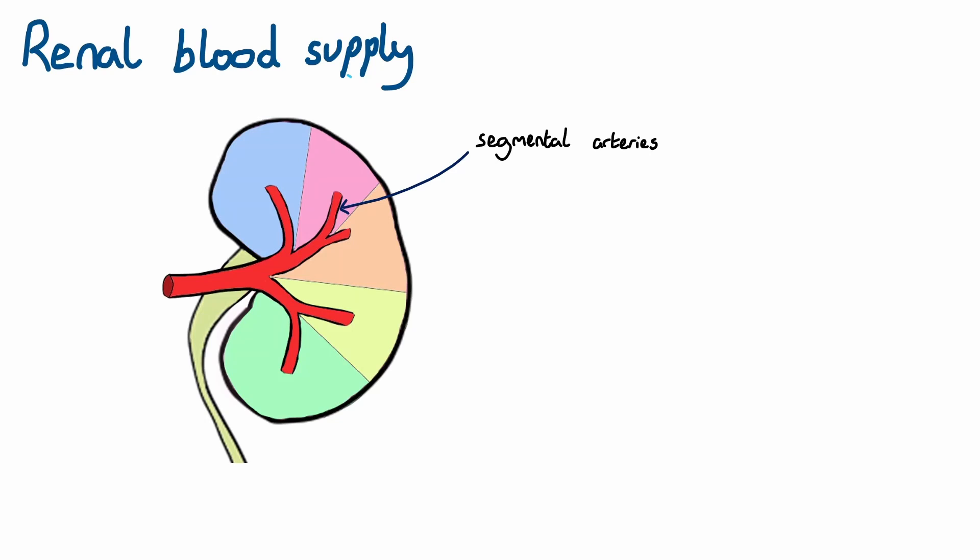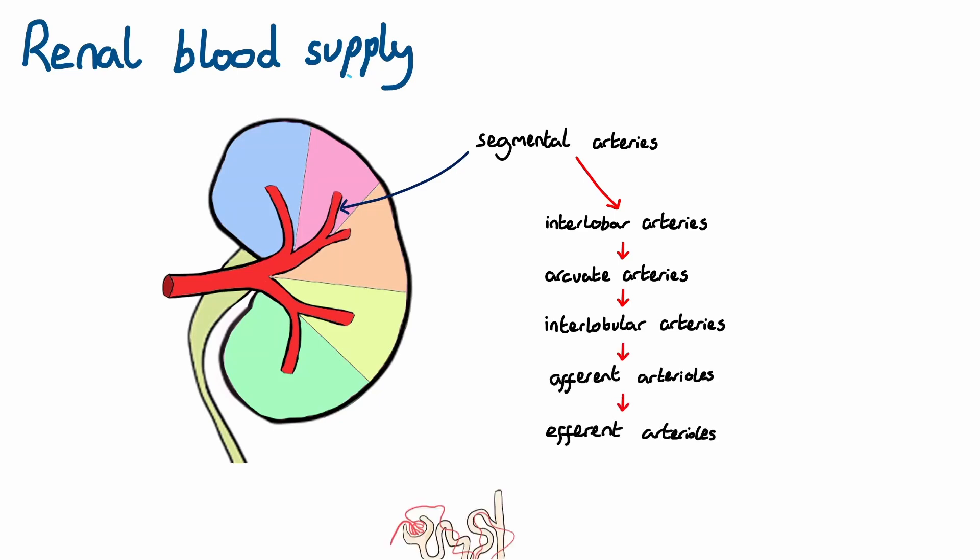Each segmental artery further divides and gives rise to interlobar arteries, which are situated either side of the renal pyramid. These branch further to form arcuate arteries, then interlobular arteries, followed by afferent and efferent arterioles, in the renal corpuscle.